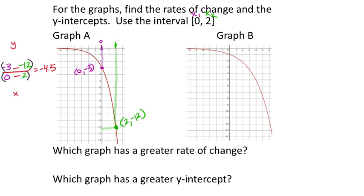Let's go to graph B and find the same information using the slope formula—x on the bottom, y on the top, always subtraction, always division. The interval says to use x = 0: I find 0 on the x number line and follow down to the red line, ending at y = negative 1. So ordered pair (0, -1): x = 0 on the bottom, y = negative 1 on top.